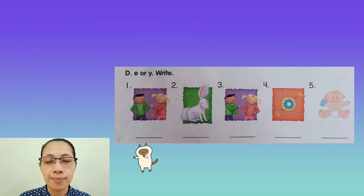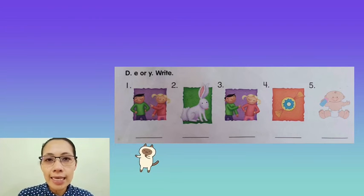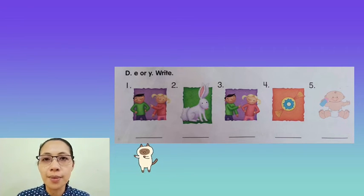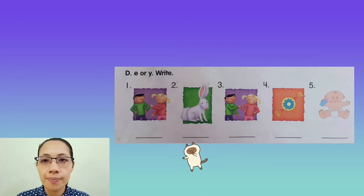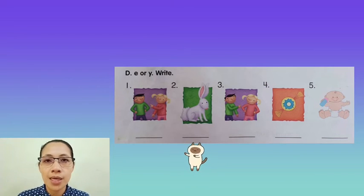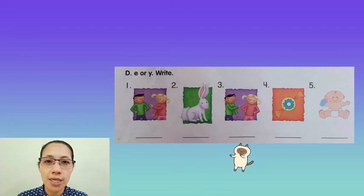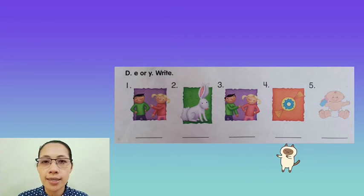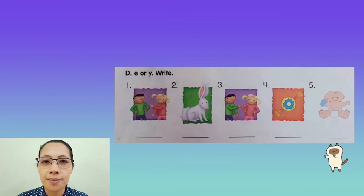Number 1, he. Number 2, bunny. Number 3, she. Number 4, candy. And number 5, baby.